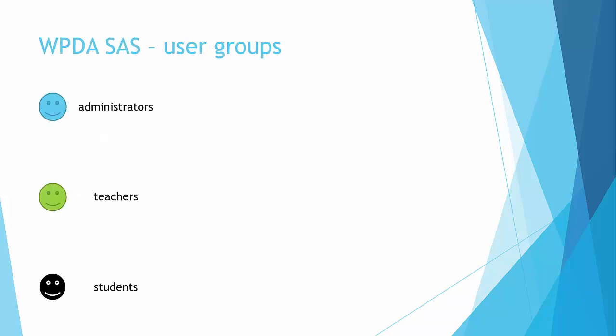For this demo I will use the student administration system. You can check out that system on the website. If you look at the student administration system, you will notice that there are three user groups: the administrator group, the teachers, and the students — and different groups have different privileges.